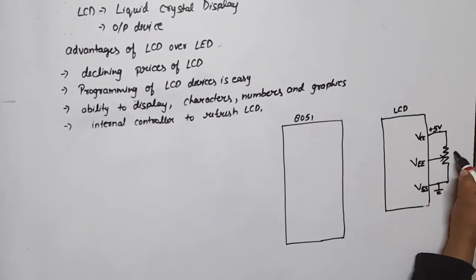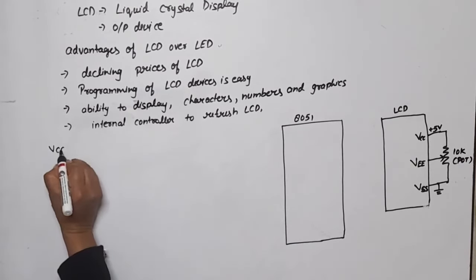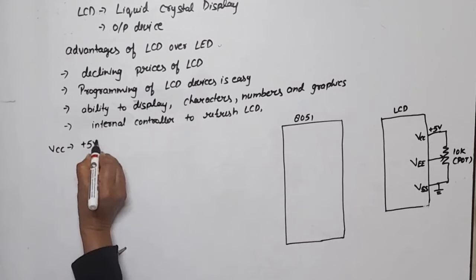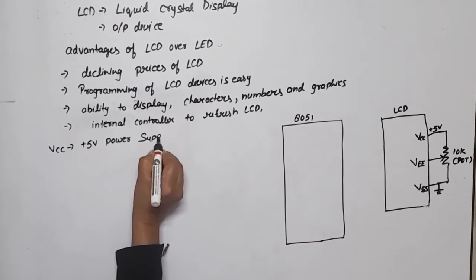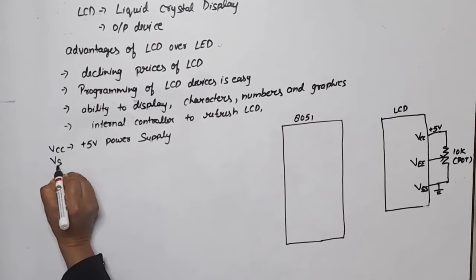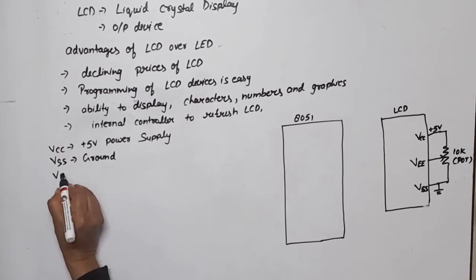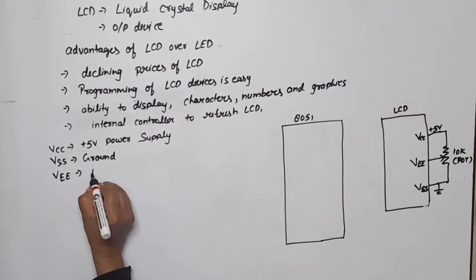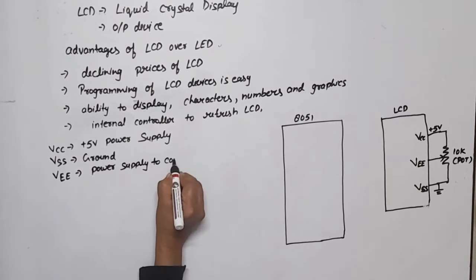This will be a variable resistance here, a 10k resistance. So VCC is plus 5 volt power supply, VSS is ground, and VEE is a power supply to control contrast.